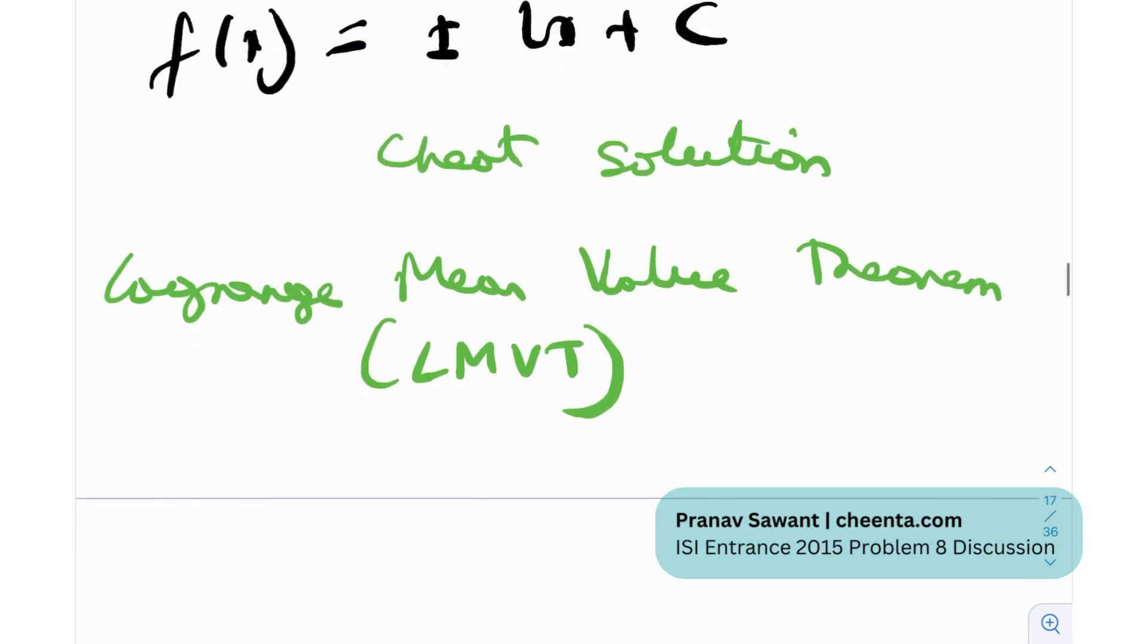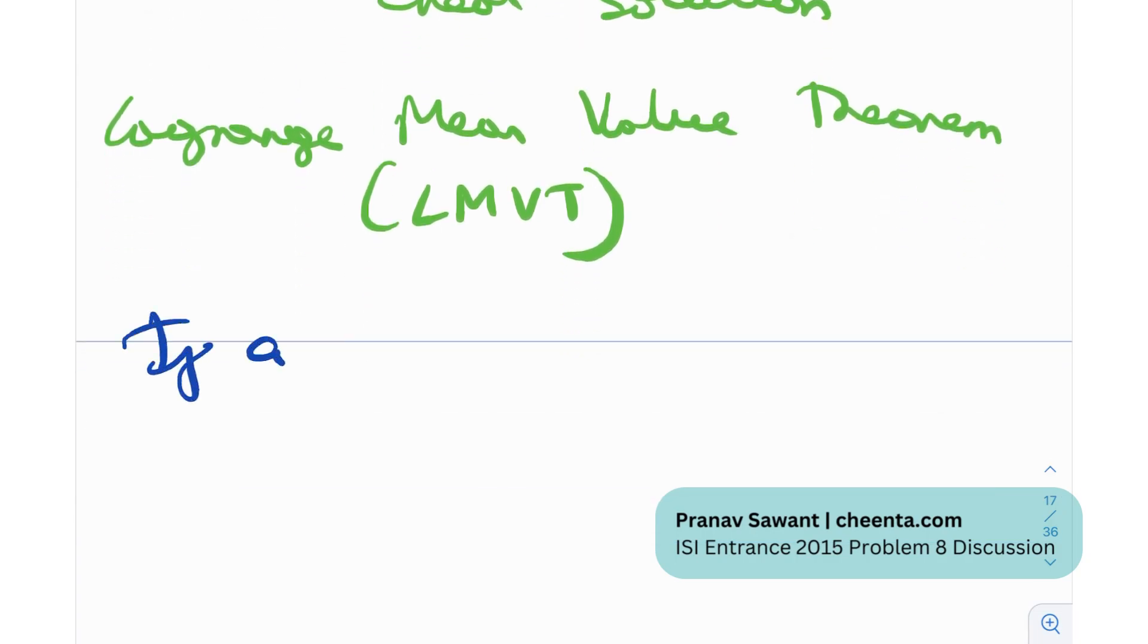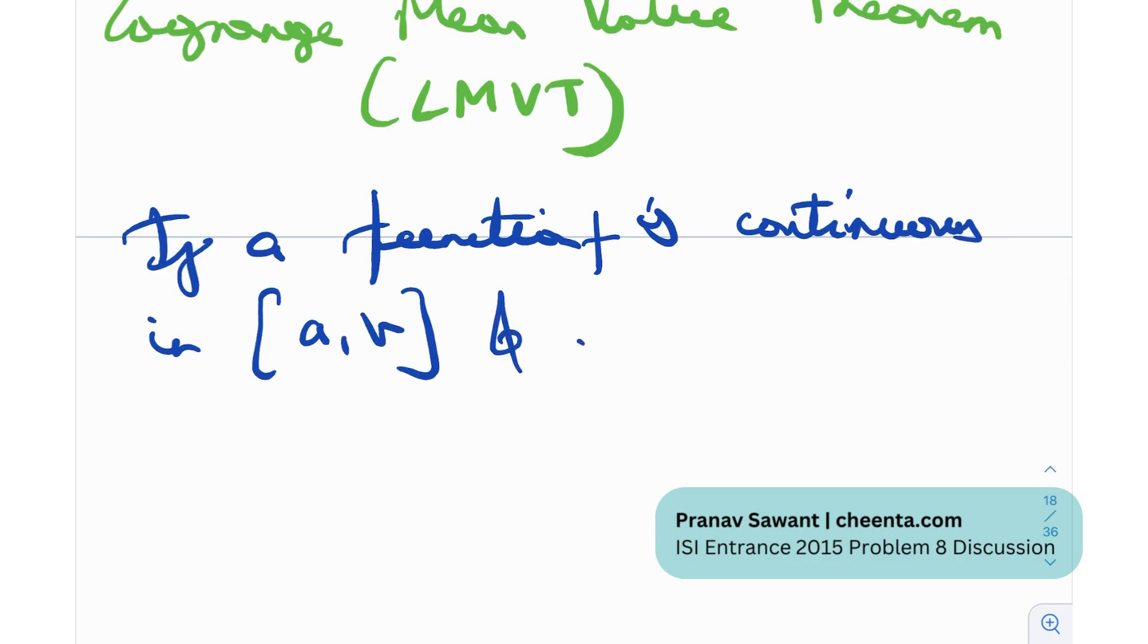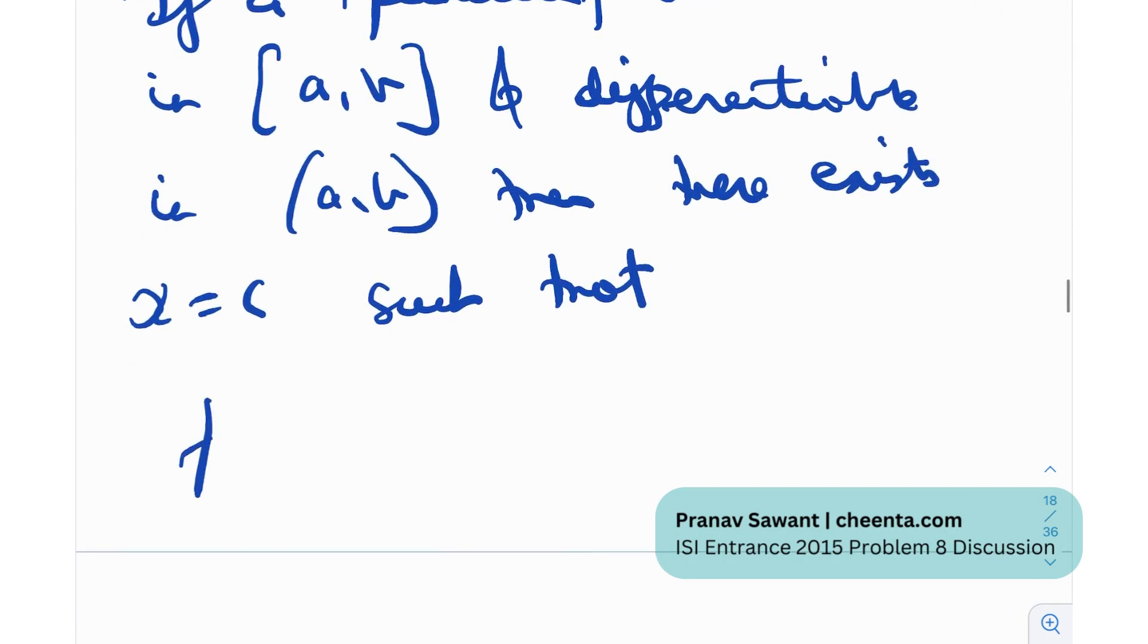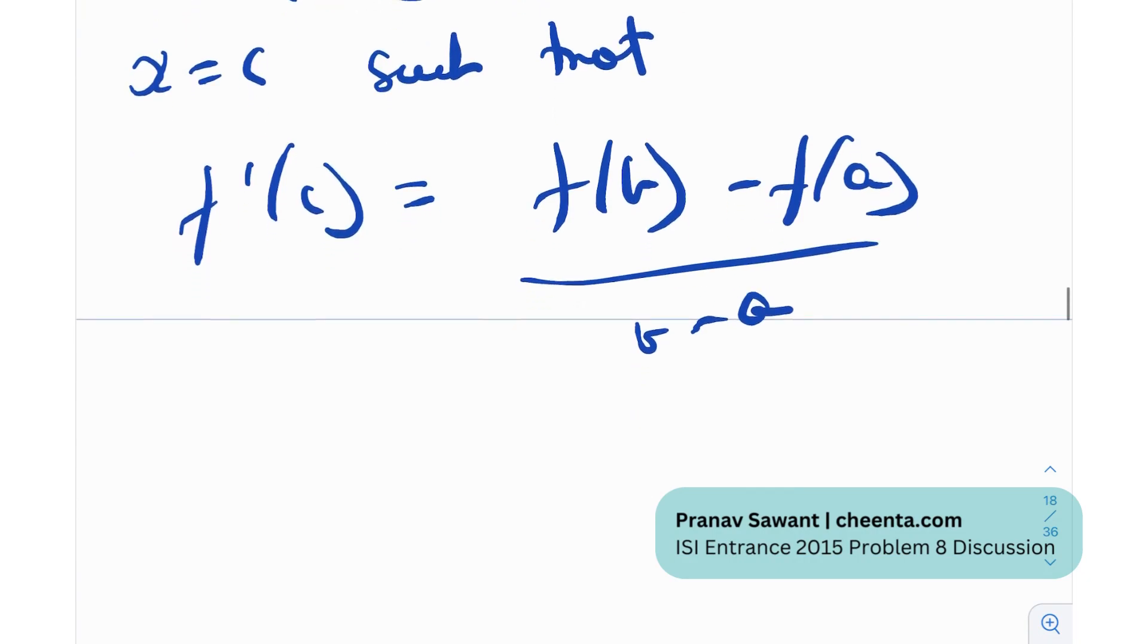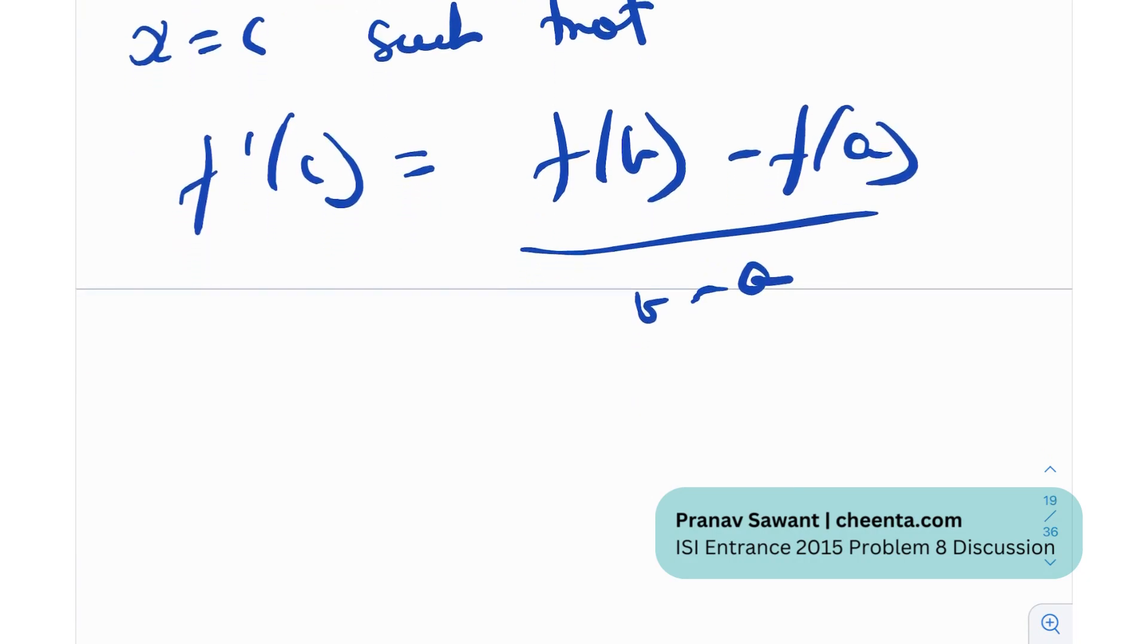Lagrange's mean value theorem, commonly known as LMVT. It's a pretty famous theorem from application of derivatives. And it states that if a function f is continuous in the closed interval a to b and differentiable in the open interval a to b, then it says that there exists x equal to c such that f'(c) is equal to f(b) minus f(a) divided by b minus a. This is what Lagrange's mean value theorem says.